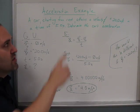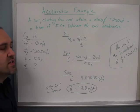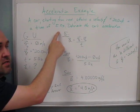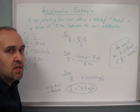Let's say we have a car and it starts from rest and attains a velocity of positive 20 meters per second in a time of 5 seconds. Determine the car's acceleration.